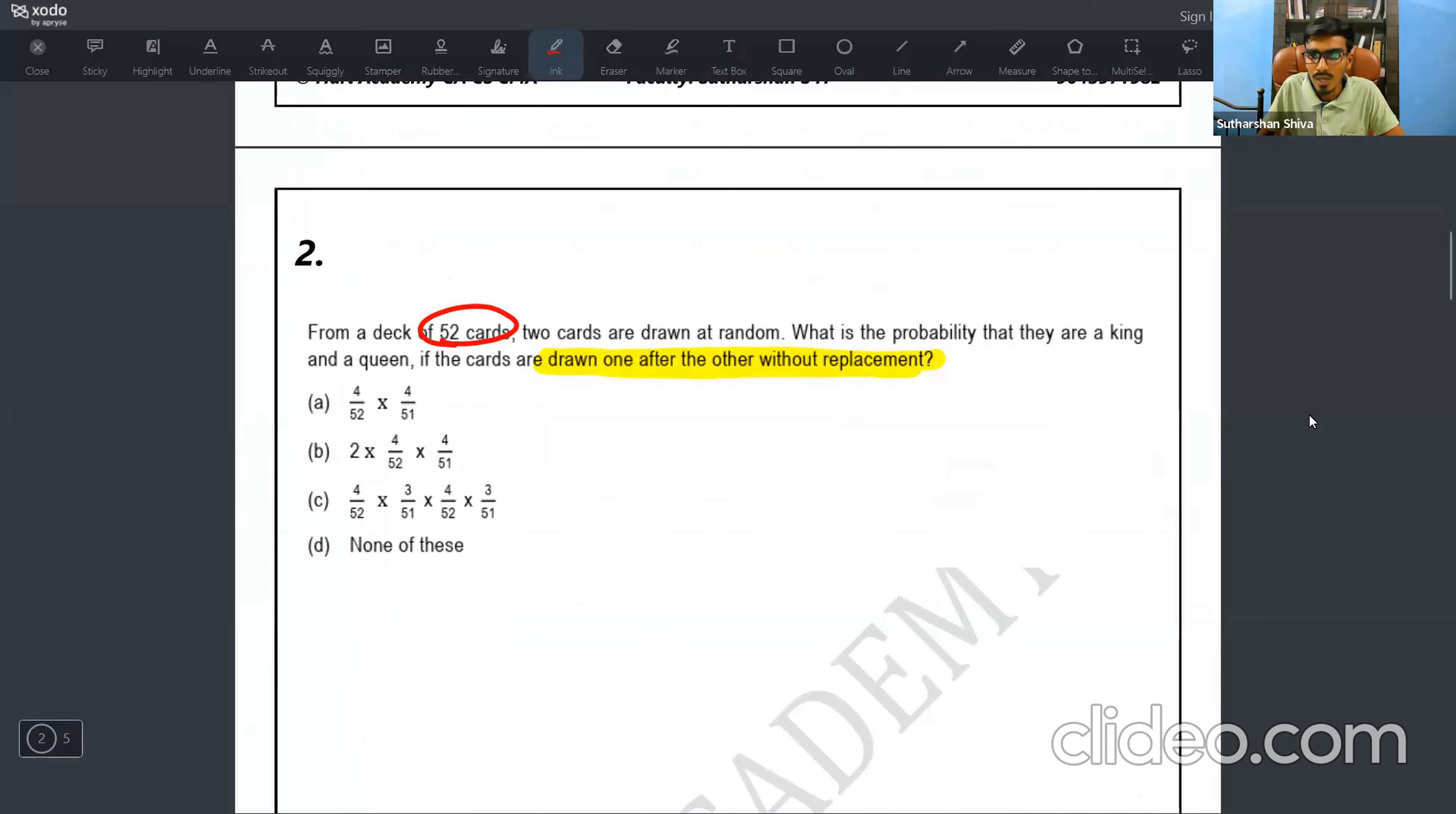From a deck of 52 cards, two cards are drawn at random. What is the probability that they are a king and a queen? And condition is there, so you need to multiply it. If the cards are drawn one after another without replacement, let's say I have 52 cards. From the 52 cards, I have picked one card. That card can be a king card or queen card.